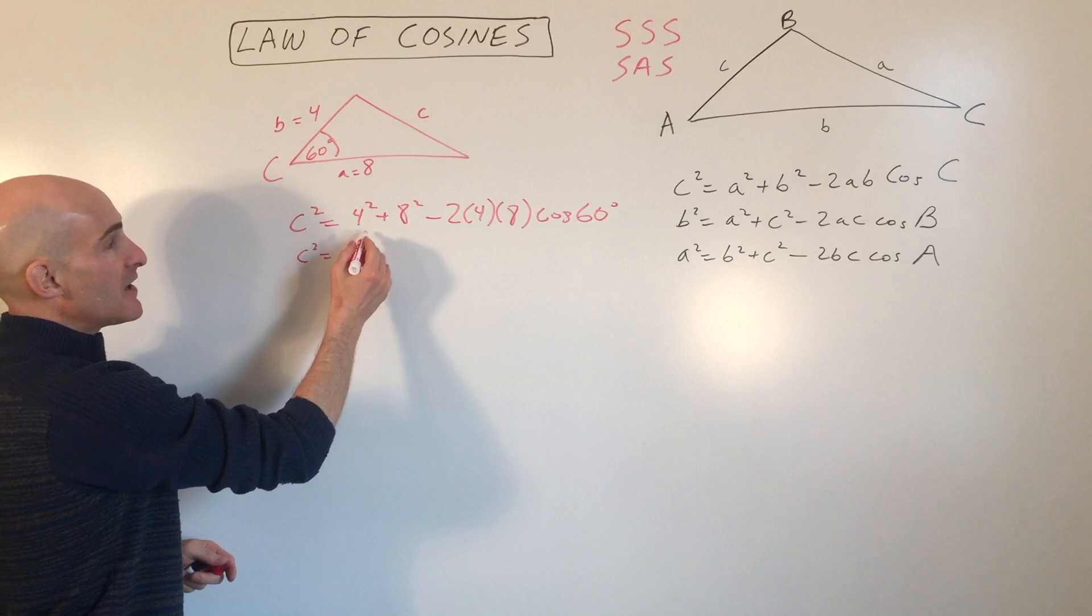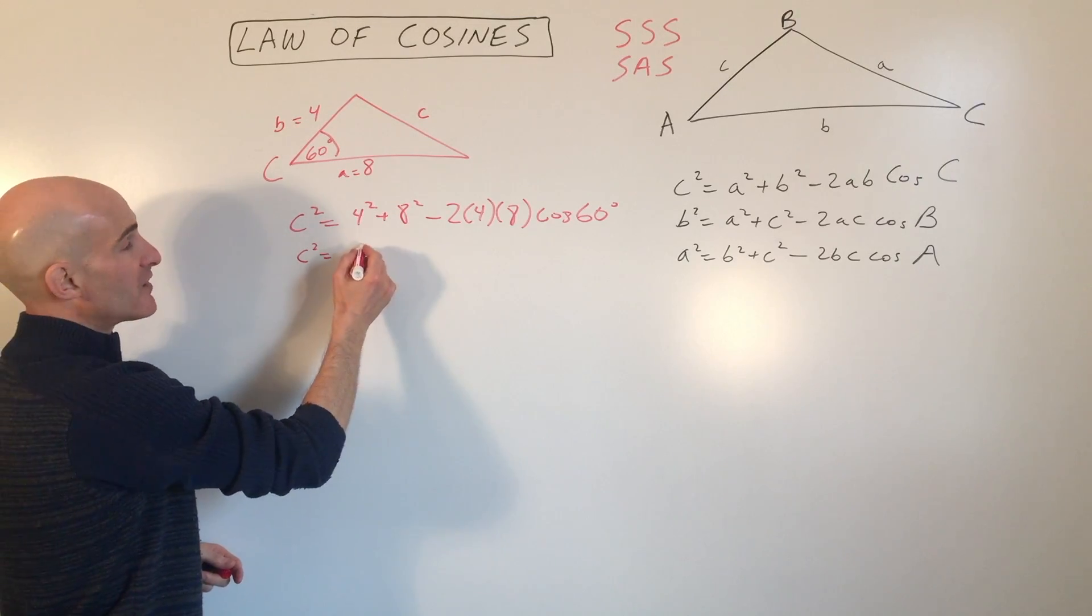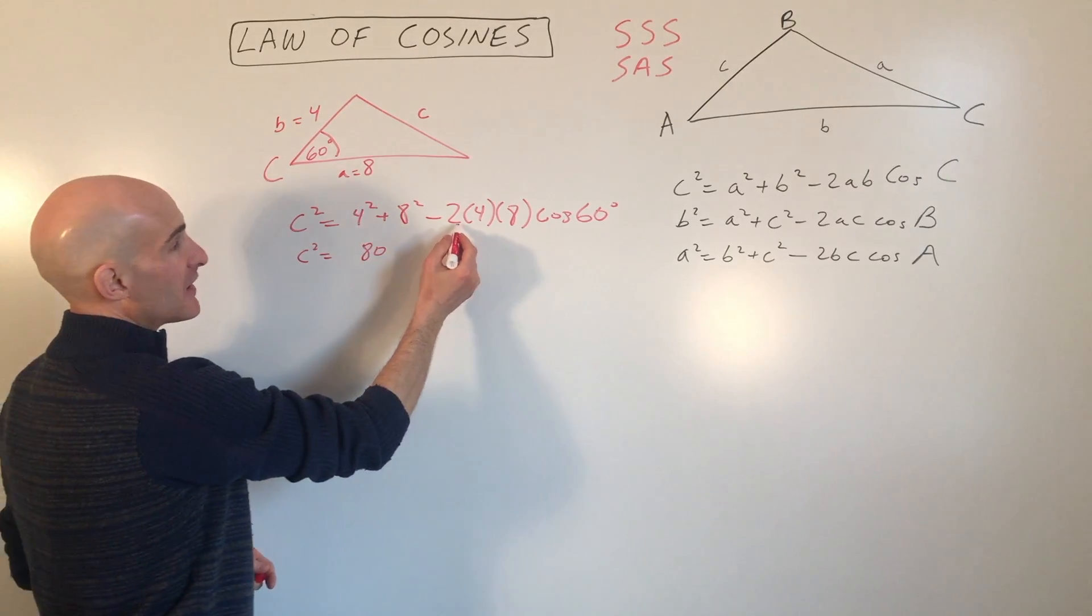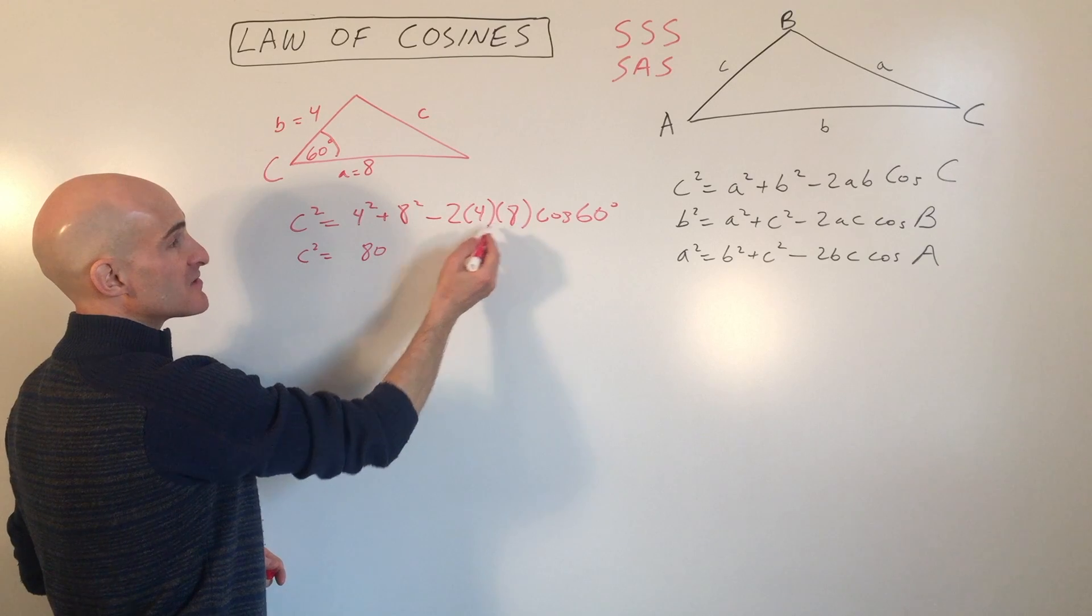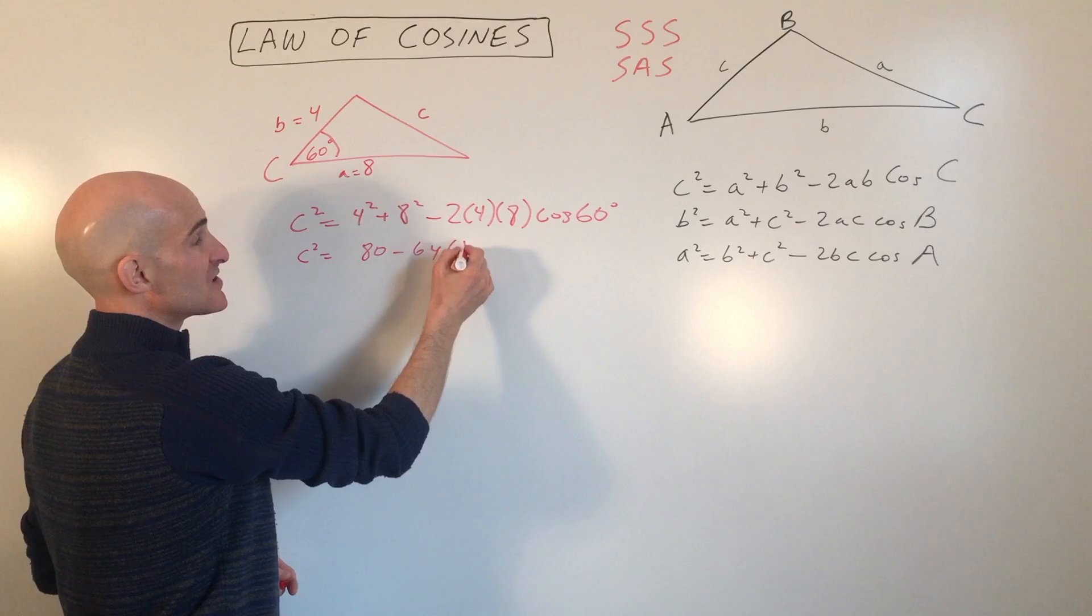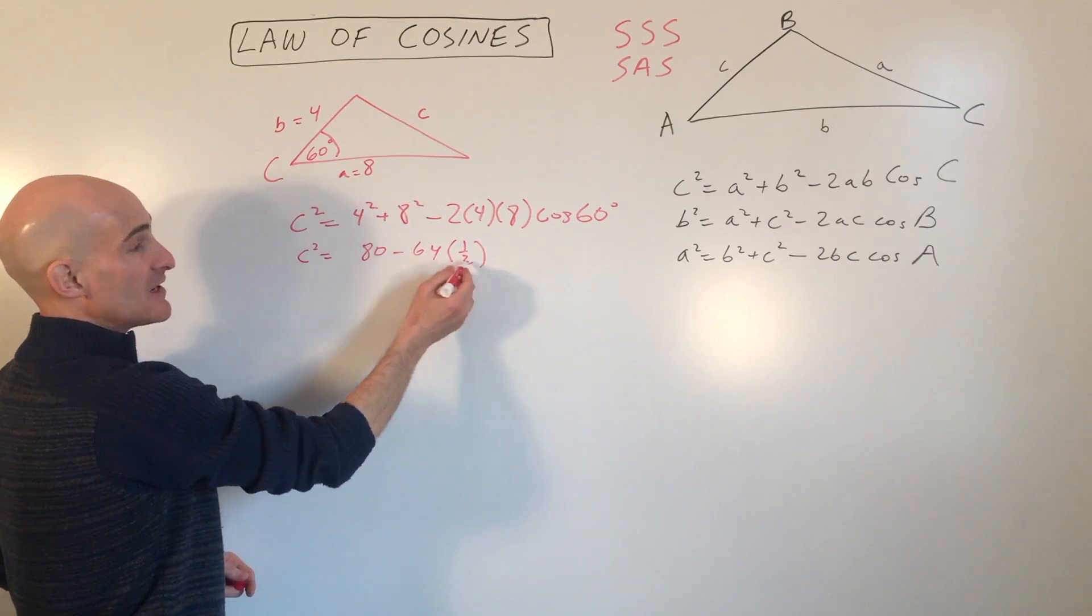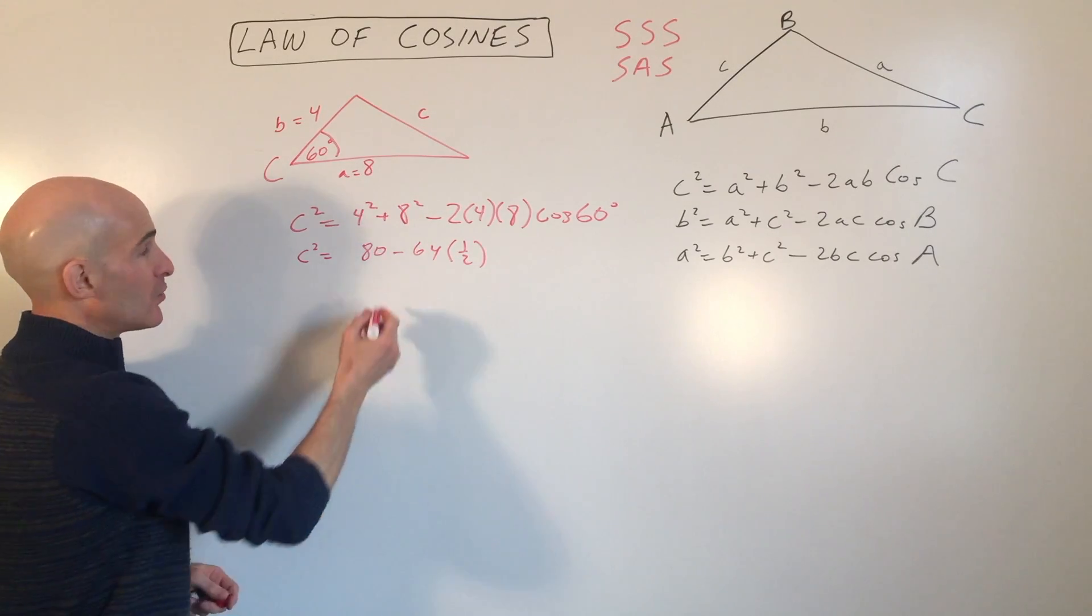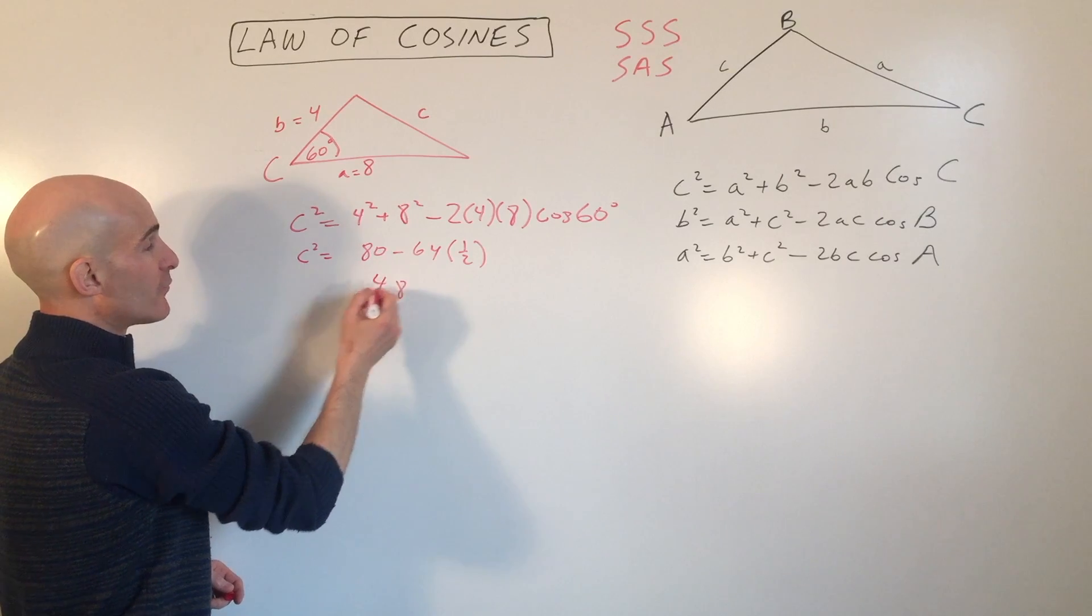So what we have here, let's simplify, 16 plus 64 is 80. And this is 2 times 4 is 8 times 8 is 64 times the cosine of 60. Cosine of 60 is a half. So we have 80 minus 32, which is 48.